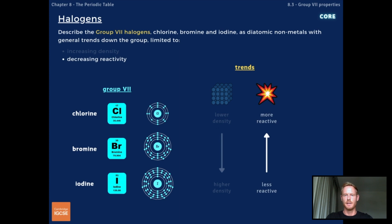Reactivity decreases moving down the group because the atoms have more electron shells, meaning the outer electrons are further from the nucleus. This makes it harder for the atom to gain an electron and form a negative ion.